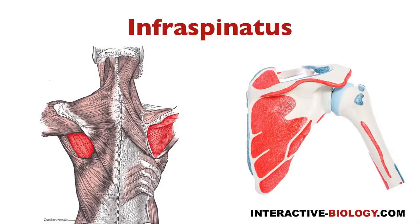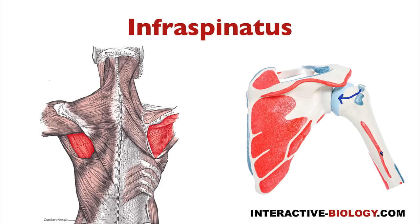So let's move on to the next one, which would be infraspinatus. And you can see that here. It's originating from the infraspinus fossa, and then it's going to insert on the middle facet of the greater tubercle of the humerus. Now what's going to happen when this muscle contracts? That's going to cause external rotation of the humerus. So you're going to externally rotate your arm, and that's going to be aided by the contraction of infraspinatus.